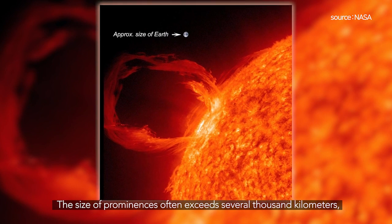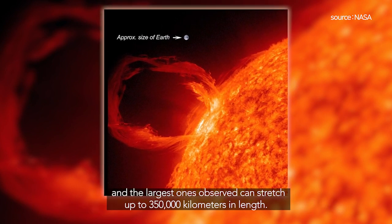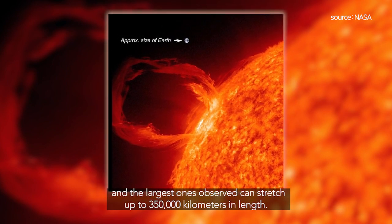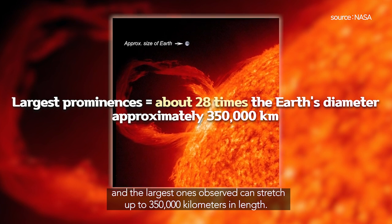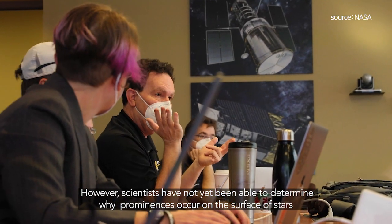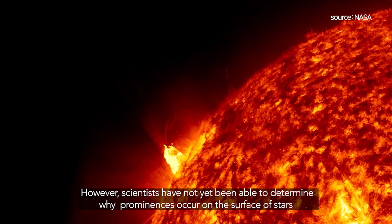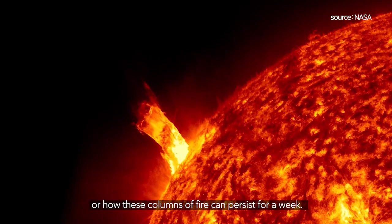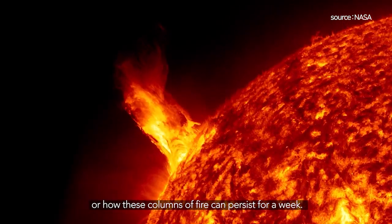The size of prominences often exceeds several thousand kilometers, and the largest ones observed can stretch up to 350,000 kilometers in length. However, scientists have not yet been able to determine why prominences occur on the surface of stars or how these columns of fire can persist for a week.